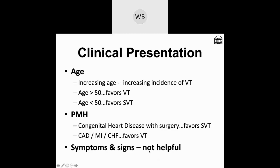Past medical history is important. As mentioned in part one, if a patient has a past history of congenital heart disease—particularly with surgical correction—that produces a bundle branch block pattern and could favor an SVT with aberrant conduction diagnosis. On the other hand, someone with multivessel coronary disease, stented or not, past myocardial infarction, or chronic significant heart failure—any of those diagnoses favor VT.